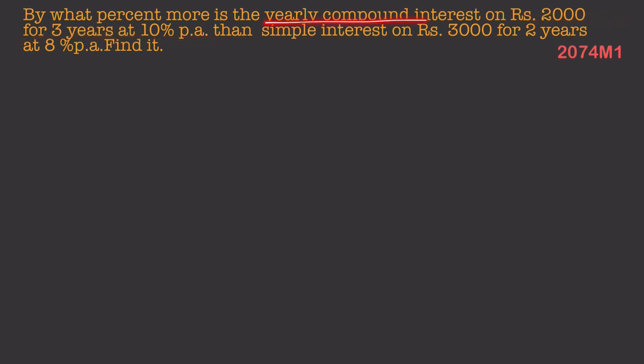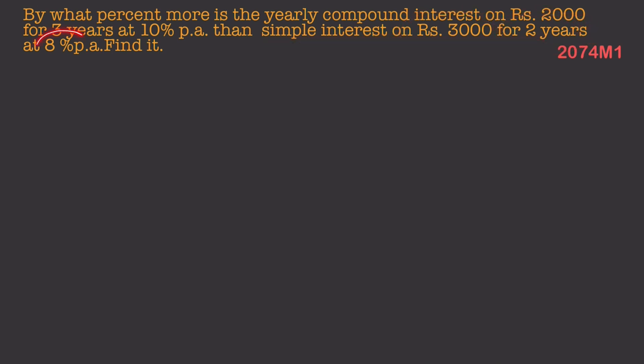First we calculate the compound interest, then the simple interest. From those two values, we find what percent more the compound interest is. For simple interest: principal, time, and rate are given. From both values we calculate the percentage difference.